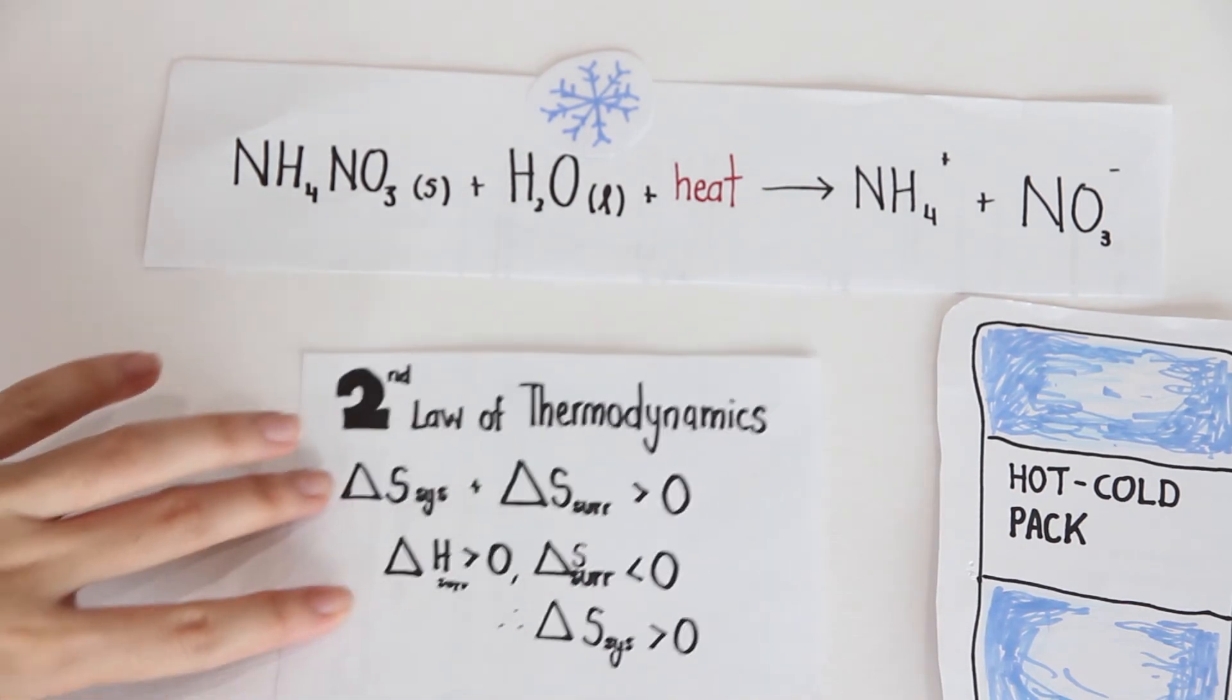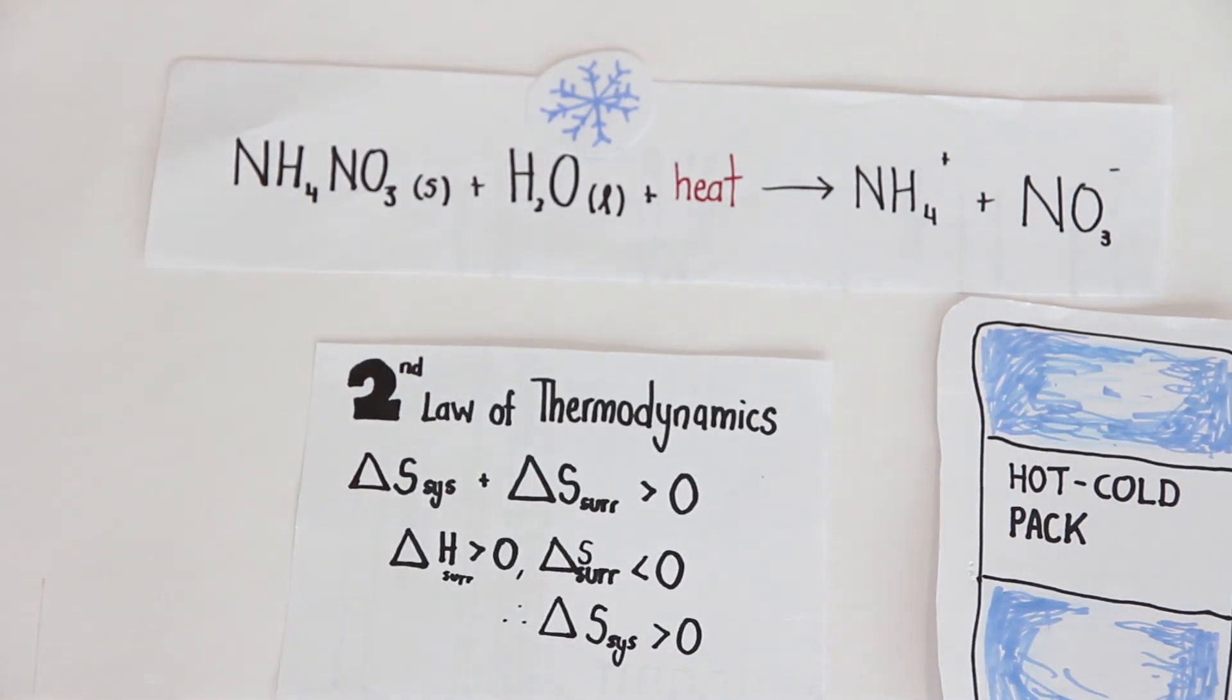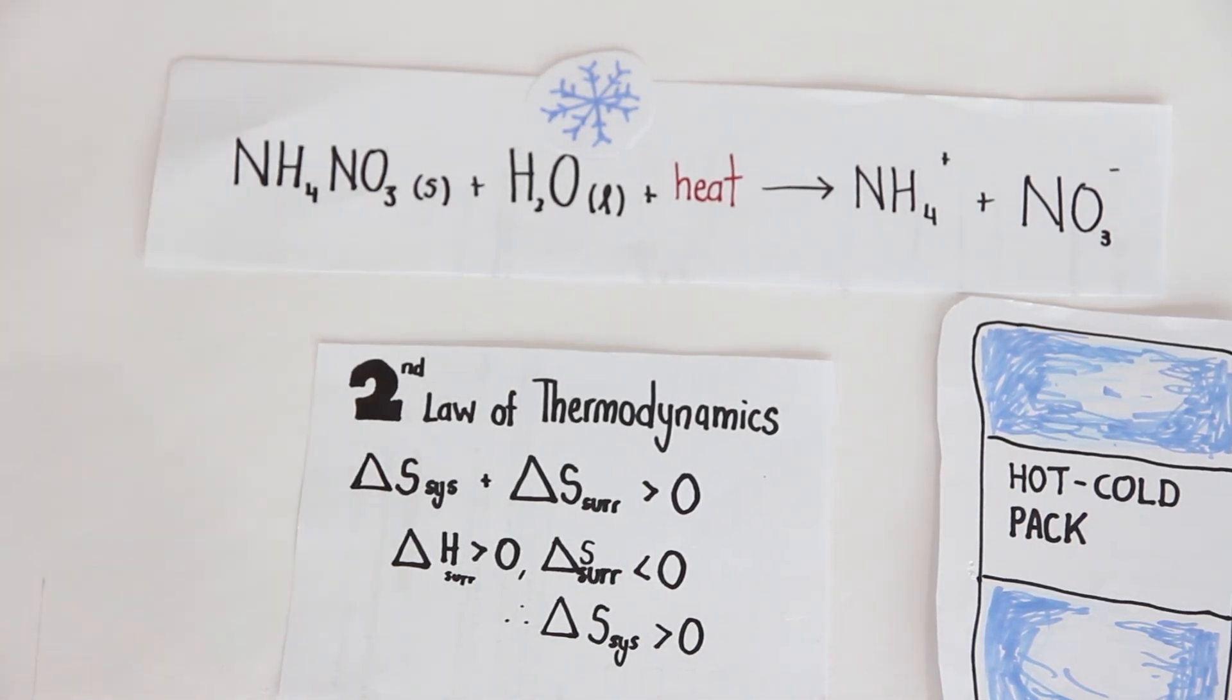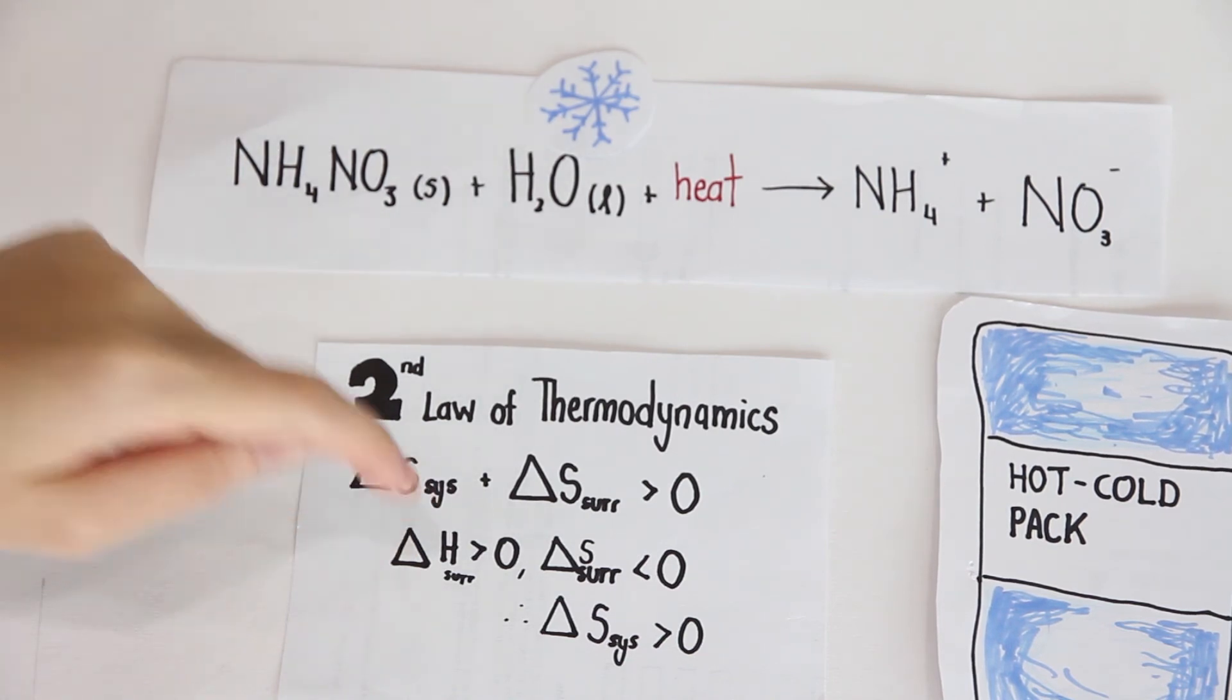Based on the second law of thermodynamics, the entropy of the universe is always increasing whereby the change in entropy of the system plus the change of entropy of the surrounding is more than zero. That is why for a spontaneous reaction to occur, given that the change of enthalpy of the surrounding is more than zero and the change of entropy of the surrounding is less than zero.